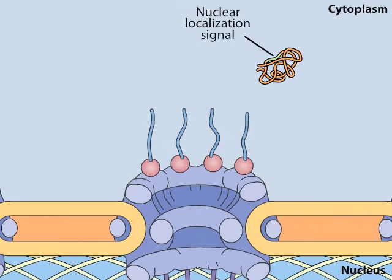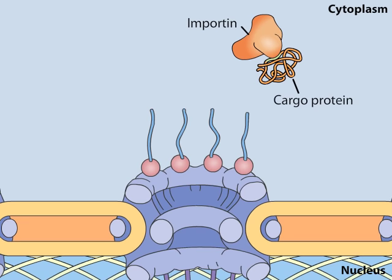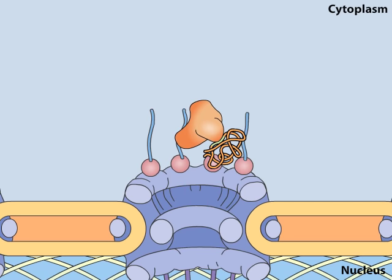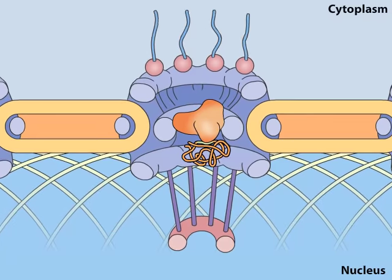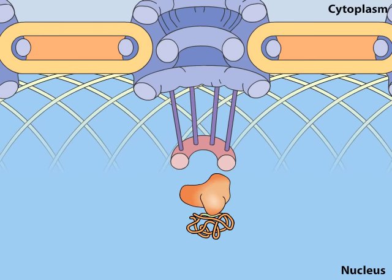Nuclear localization signals are recognized by nuclear transport receptors called importins, which carry the cargo proteins into the nucleus. With its cargo attached, importin binds to specific nuclear pore proteins in the cytoplasmic filaments. By sequential binding to more interior nuclear pore proteins, the complex is translocated through the nuclear pore.